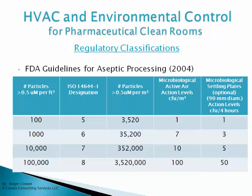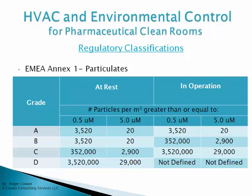ISO class 5 also has an optional microbiological settling plate specification: a 90-millimeter settling plate exposed for four hours has a limit of not more than 1 CFU per plate. You can see the other classifications as well. Over in Europe, EMEA Annex 1 has a separate set of specifications for particulates, classifying rooms as grade A, B, C and D.